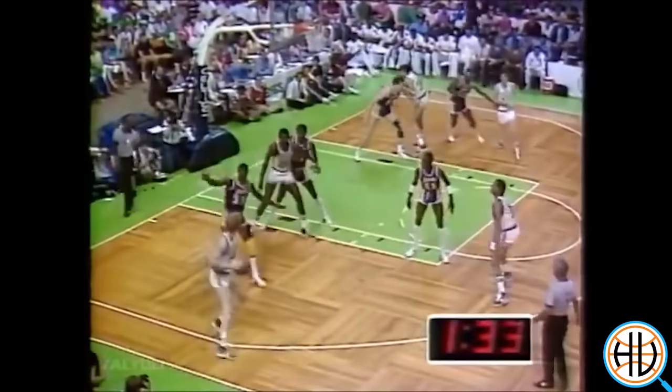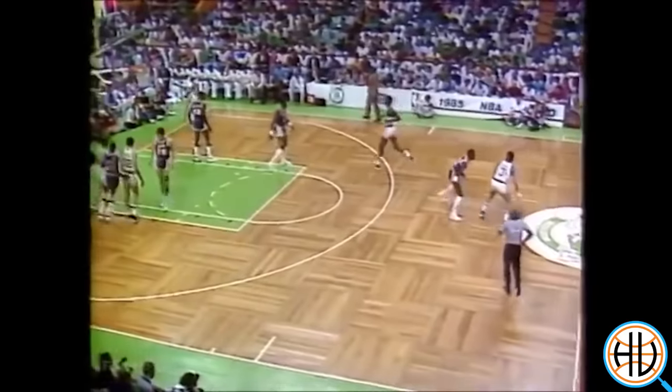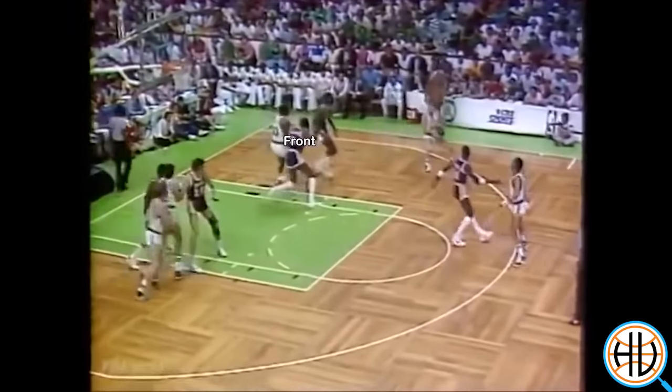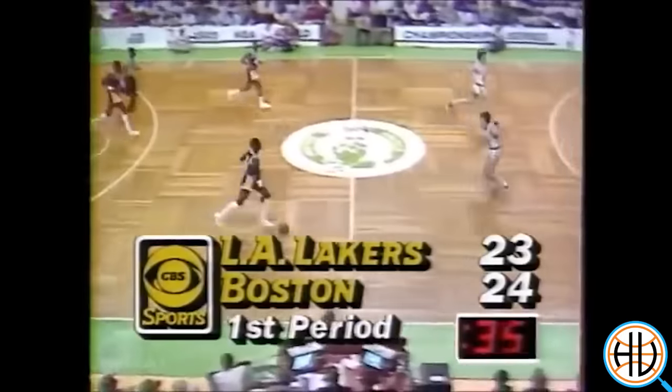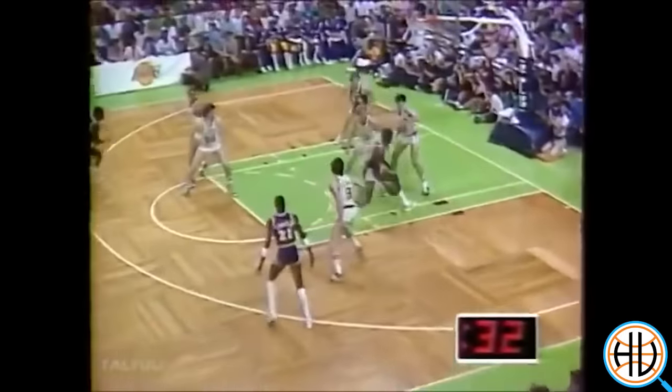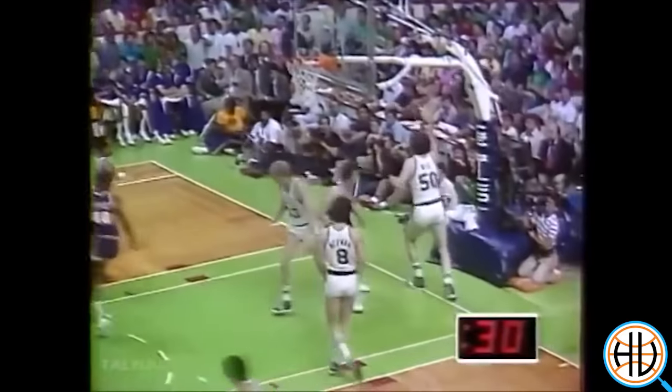The guards could also switch places on the baseline, adding another layer for the defense to react to. However, the majority of the time the Celtics ran floppy, they were looking to feed the post — Bird or whoever received the screen would look to get the ball inside to Robert Parrish and Kevin McHale. The Lakers also played with two big men on the blocks, but their primary action was the cross screen: the big on the strong-side block would set a screen for the big on the weak-side block, looking for a paint touch, flowing right into that action for Kareem Abdul-Jabbar and James Worthy.